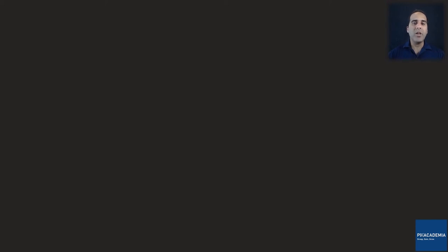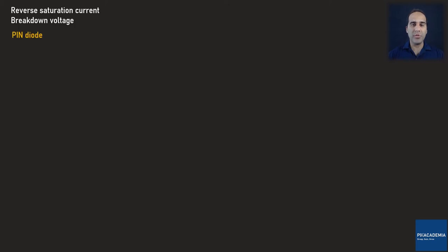In this course, I have spent lots of time discussing different mechanisms taking place in a PN junction diode, covering pretty much every important concept related to PN junctions. In higher voltage and power applications, the PN junction reverse saturation current and breakdown voltages become limitations. As a result, a modified version of the PN junction diode, called the PIN diode, can be used.